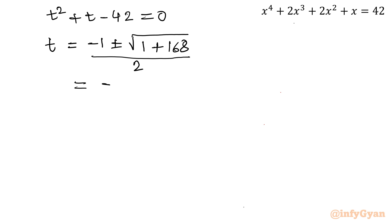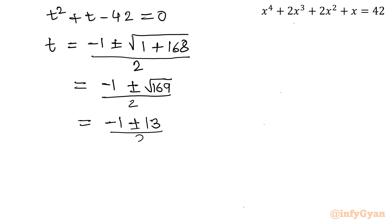I will write: minus 1 plus or minus square root of 169, over 2. We know that square root of 169 is 13. If I consider the plus sign, then minus 1 + 13 = 12, so 12 over 2 = 6. If I consider the minus sign, then minus 14 over 2 = minus 7. So t = 6 or t = −7.